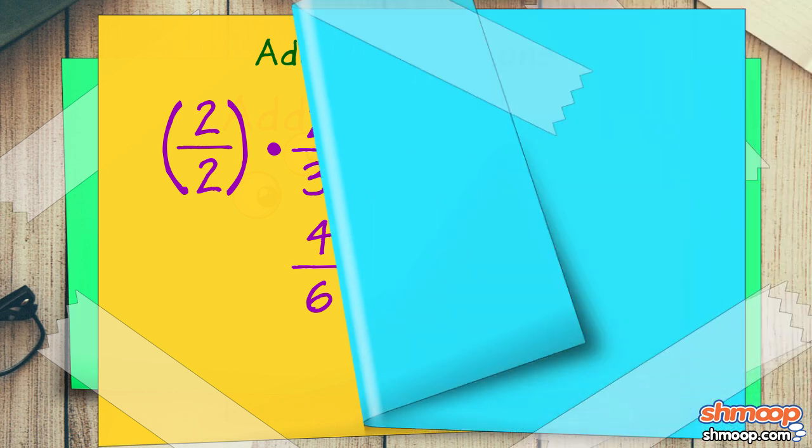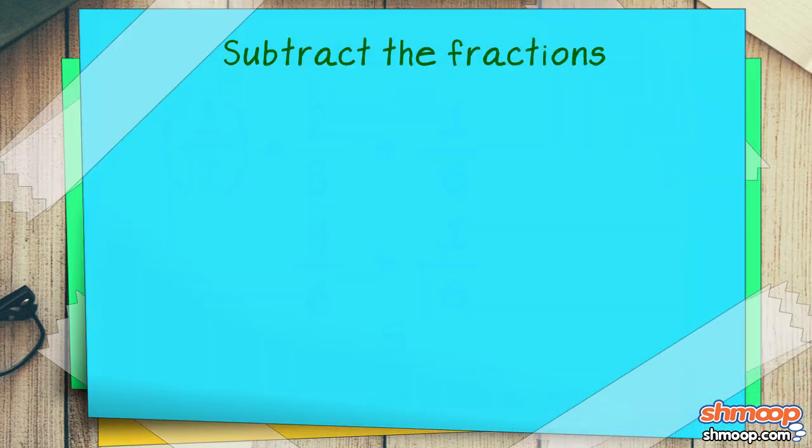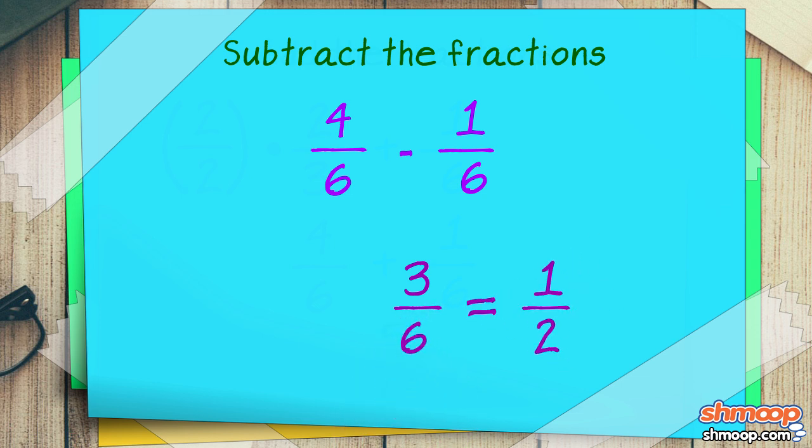Well, guess what? It works for subtraction too. Subtracting, we get four-sixths minus one-sixth equals three-sixths. And of course, we can reduce it to get one-half.